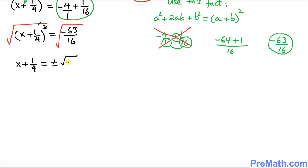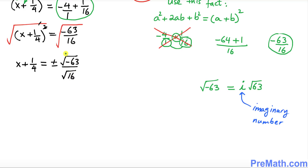We can split this as the square root of negative 63 divided by the square root of 16. The square root of negative 63 can be written as i times the square root of 63, where i is an imaginary number. Always remember that the square root of negative 1 equals i.